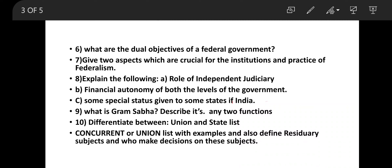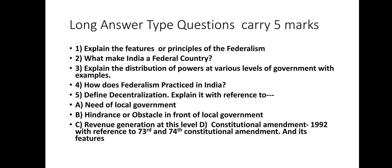Differentiate between Union List and State List — this can be asked in multiple ways as a three-mark question. You need to cover the subjects under each list, examples, and which government has jurisdiction. The same applies to differences between the Concurrent List and Union List. Finally, residuary subjects — you should know which government has jurisdiction over residuary subjects and who makes laws over them.